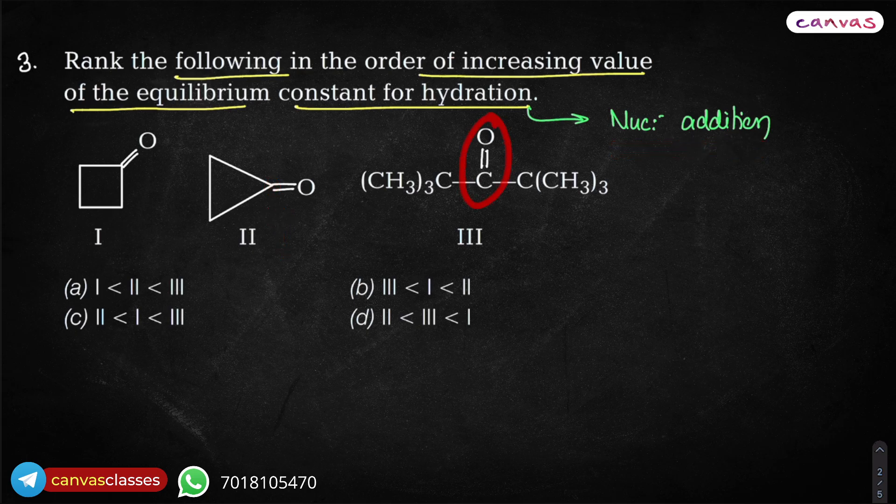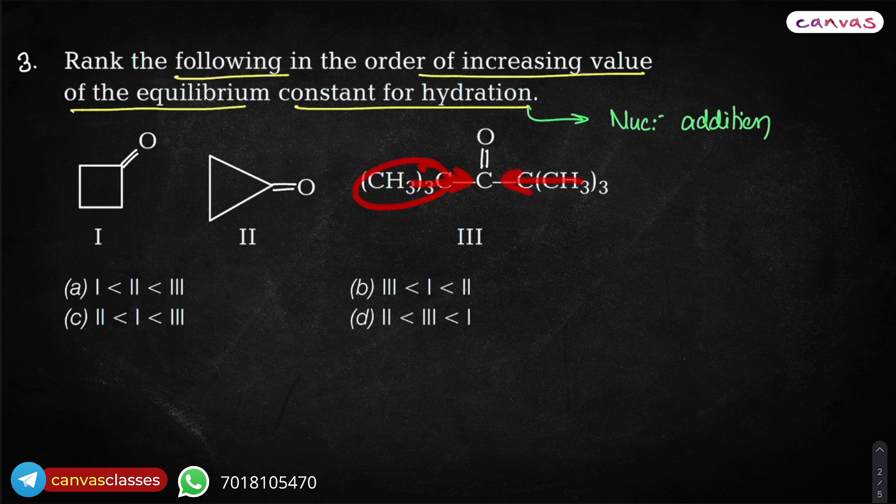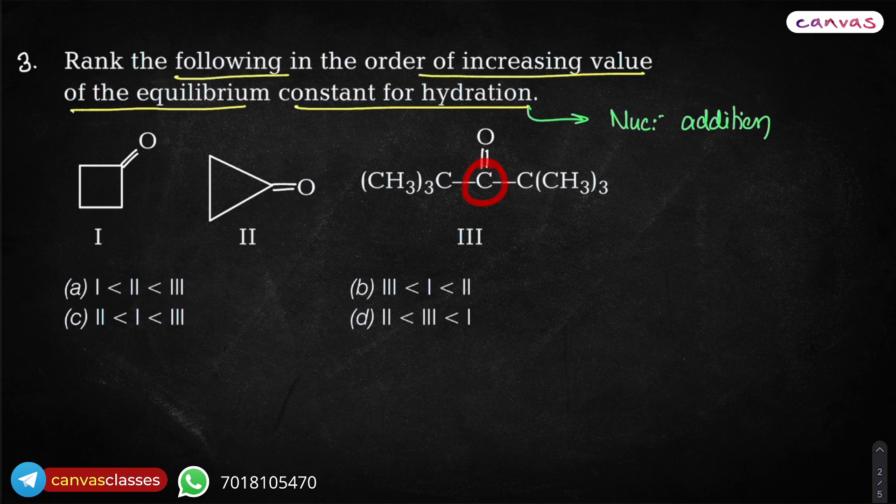Now, in this case, in third one, on both sides, there is too much of steric hindrance. So attack of nucleophile is limited because of the steric hindrance. Secondly, both are donating groups. So because of the donating group on both sides, this carbon is not very electrophilic. That means the chances of nucleophilic attack are even slimmer.